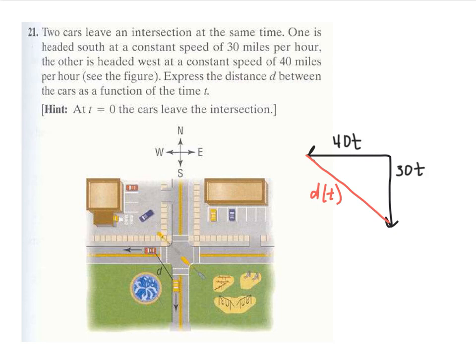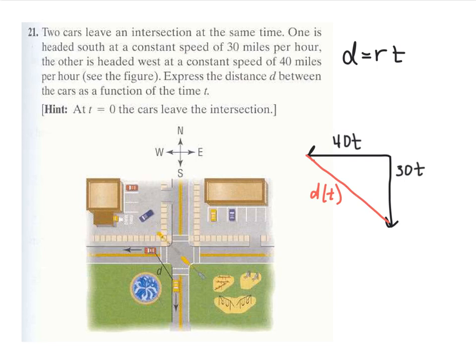The car heading south at 30 miles per hour travels a distance of 30t. The car heading west at 40 miles per hour travels 40t. Knowing that an intersection creates a right angle, we can use these two distances to find how far apart the two cars are in terms of t.